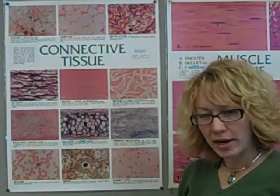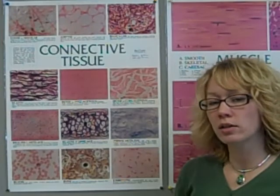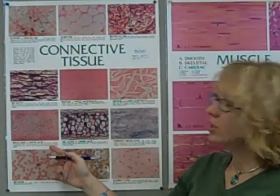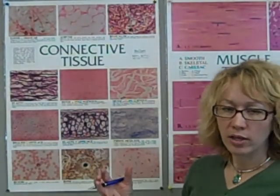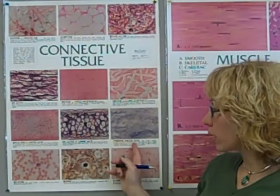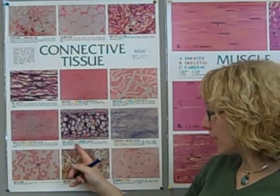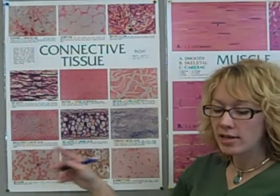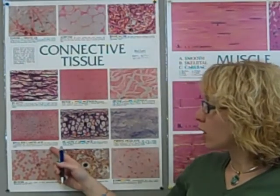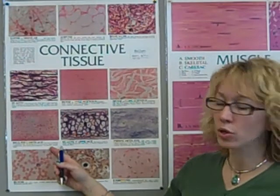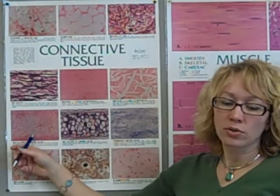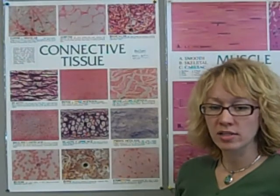The next pair of connective tissue types are cartilage and bone, which have very distinctive appearances. Cartilage is found in the nose, ears, surrounding joints, and various places around the skeleton. The three basic types of cartilage are hyaline cartilage, elastic cartilage, and fibrocartilage — each slightly modified for a different function. Hyaline cartilage is found in the cartilage of the ribs connecting them to the sternum, in the nose, the trachea, and the ends of long bones. It also serves as the model for the fetal skeleton during embryonic development.